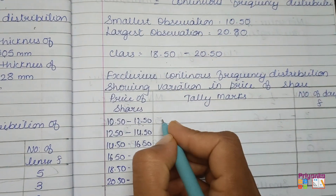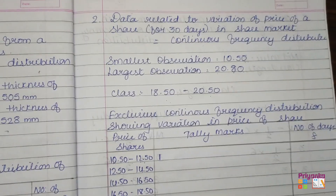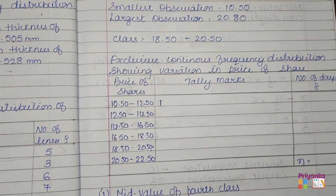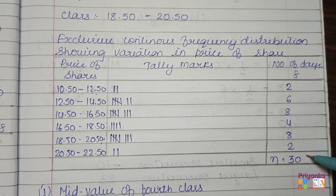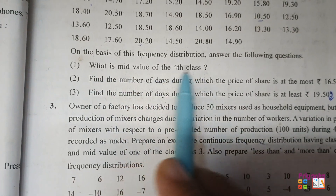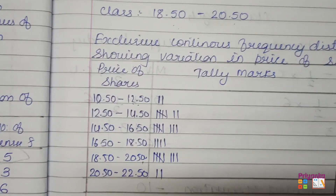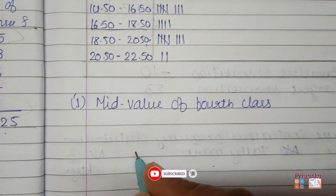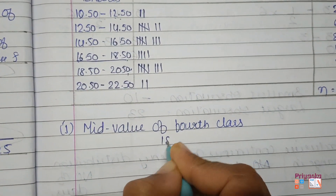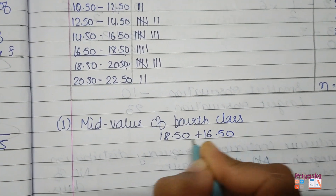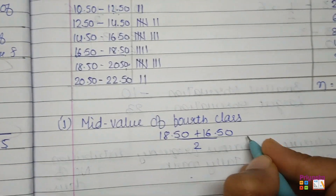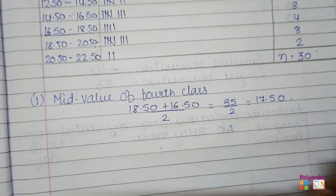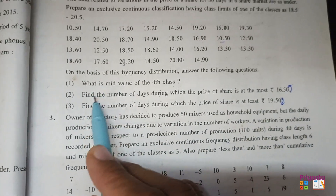After completing the class intervals, we continue with tally marking, being careful to place each value in the correct class to avoid frequency errors. After completing the tally marking and finding frequencies, the first sub-question asks for the mid-value of the fourth class. The fourth class is 16.50 to 18.50. The mid-value is: upper boundary plus lower boundary divided by 2, that is 18.50 plus 16.50 divided by 2, giving 35 divided by 2, which equals 17.50.